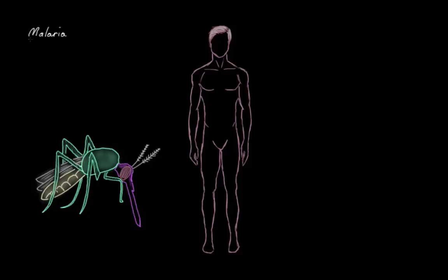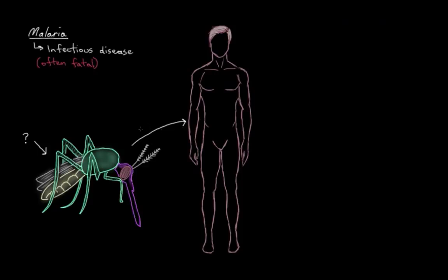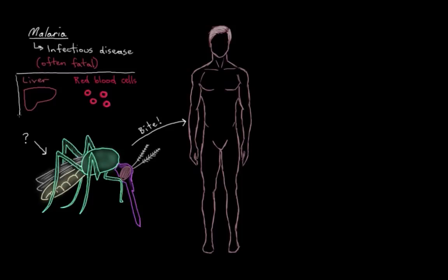What is malaria? And importantly, why is there a mosquito drawn here? Well, the mosquito is actually pretty important. Malaria is an infectious and often fatal disease that is transmitted to humans and other animals — not just humans — most often by being bitten by an infected mosquito. Interestingly, malaria is primarily a disease of the liver and of the red blood cells, which explains some of the symptoms we see in malaria.